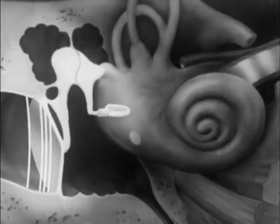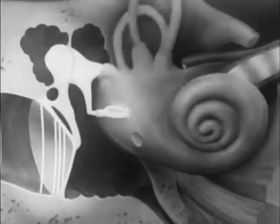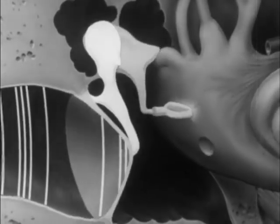These bones are in the middle part of the ear called the middle ear. The largest of the three bones is about one quarter of an inch long. The bone attached to the eardrum is the hammer. The middle bone is the anvil, and the bone at the right is the stirrup.